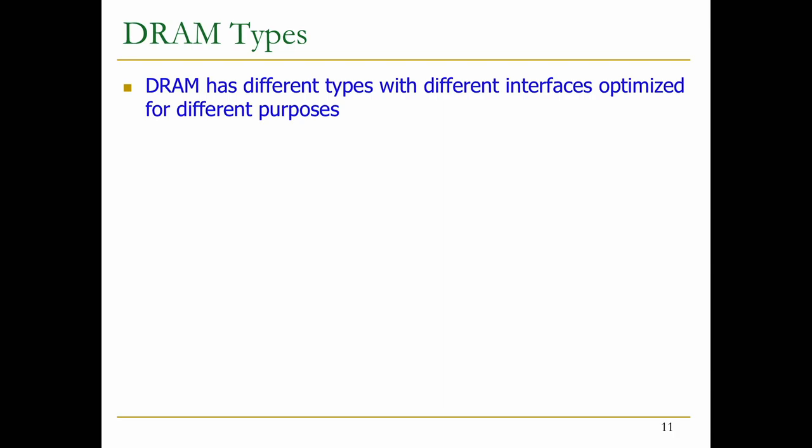That's increasingly being employed in DRAM as well — having additional spare rows or spare columns that you can activate dynamically. But how can you detect that these rows are worn out? There are mechanisms to detect wear-out. We'll talk about that when we talk about flash memory.